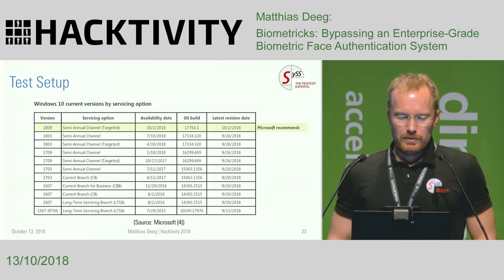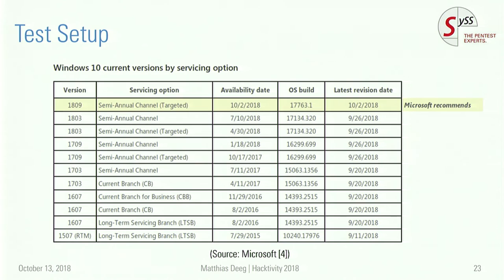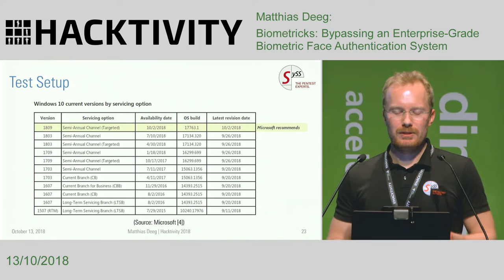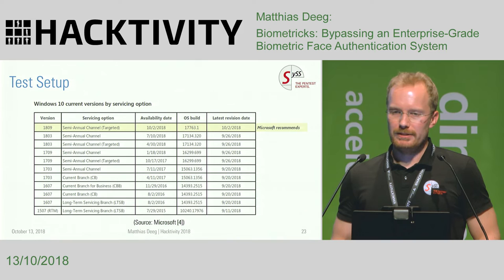There is not only one current Windows version but several Windows 10 versions supported by Microsoft. The software versions we targeted at the end of last year were mainly the current branch for business, version 1607, because that was used by our customer. Later we also tested versions 1703 and 1709.